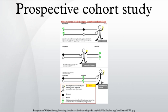A prospective cohort study is a cohort study that follows over time a group of similar individuals who differ with respect to certain factors under study, to determine how these factors affect rates of a certain outcome.